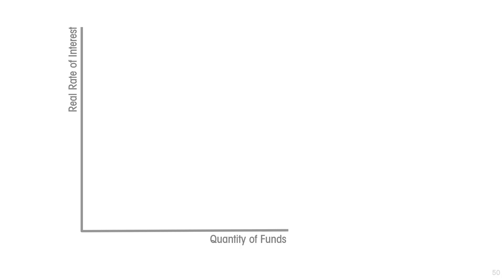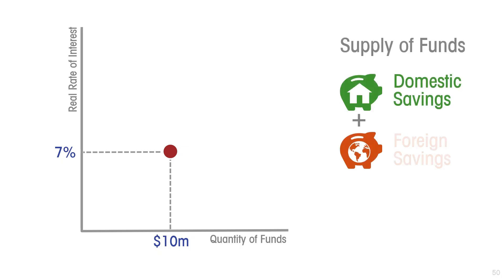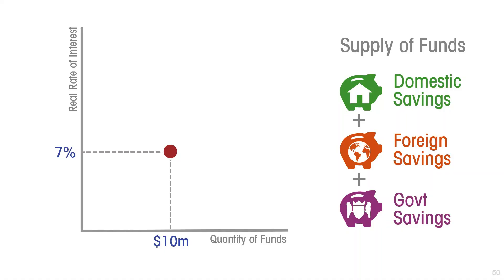Let's consider the shape of the supply curve. Starting from an arbitrary point — say the current rate of interest is seven percent and at that rate ten million dollars is made available to the financial sector for lending. There are three possible sources of savings in an economy: private domestic savings, foreign savings sent into the local economy, and government savings when government taxes more than it spends.